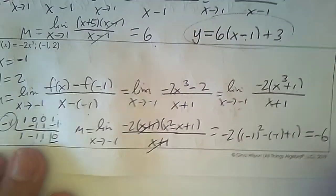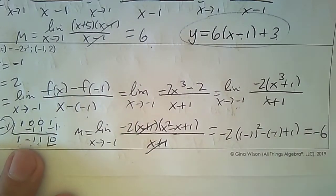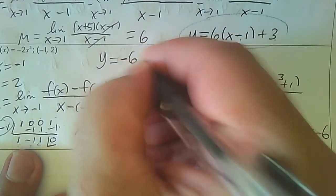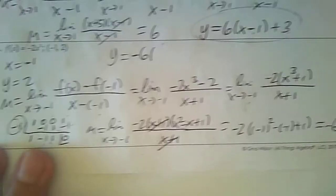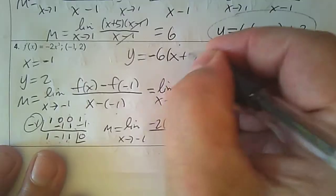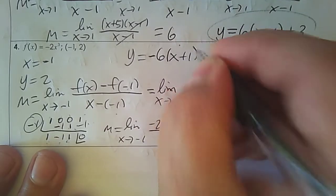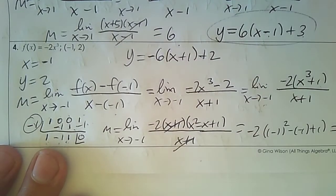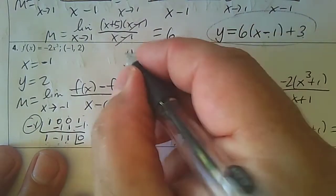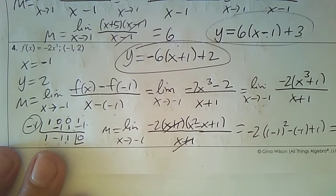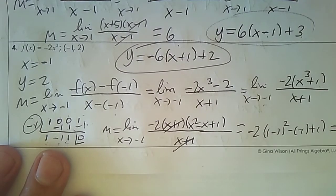Now let's put it all together. The slope is negative 6. The equation is y equals negative 6 times (x plus 1) plus 2. This is the equation of the tangent line.